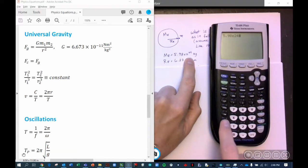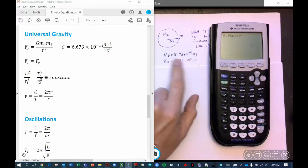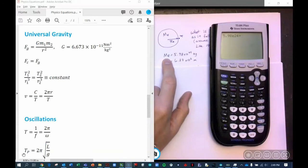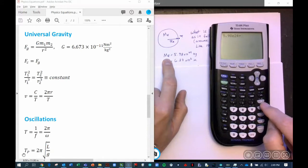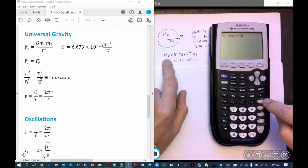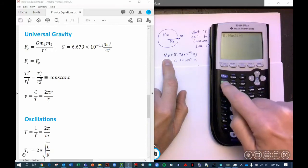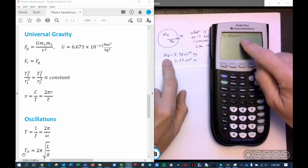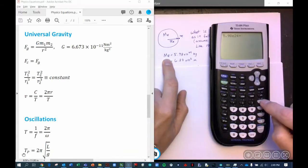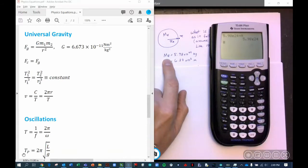And we can store this by pressing the STO button. Now we want to store this into some variable. And because it's going to be the mass of the Earth, we can use the letter M. Unfortunately, you can only use one letter. So that's the little green M here. So I press the green button, the alpha button, which changes the icon to a blinking A for alpha. And then I press the little M here, which is over the division symbol. If I hit enter, that gives me M.